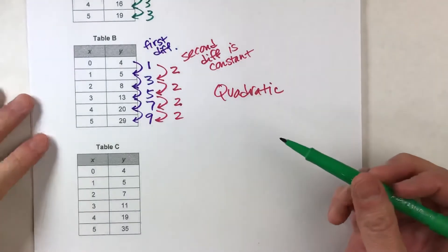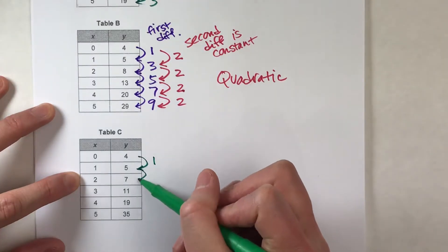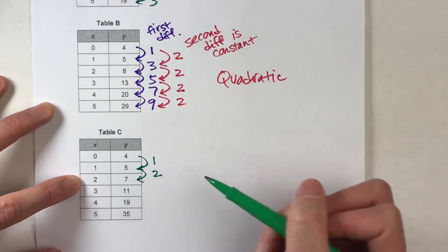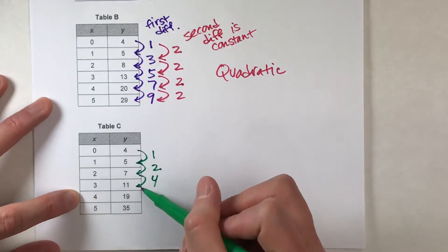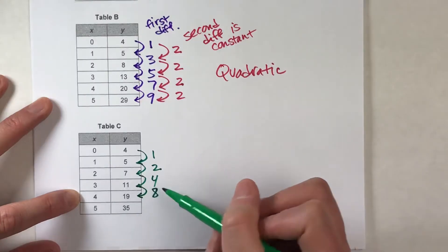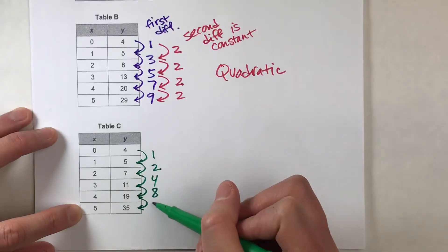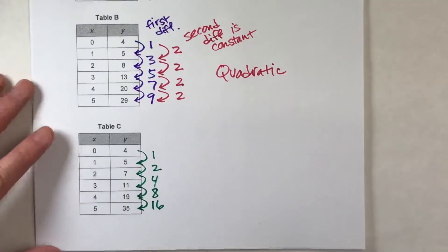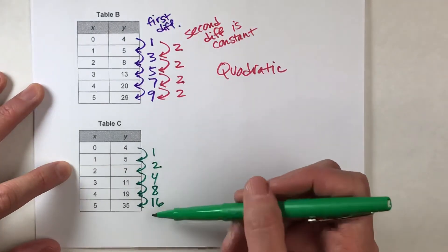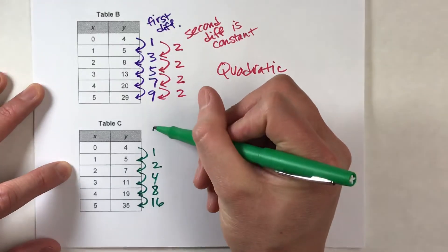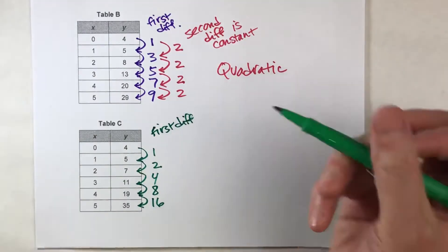Here we go. Table C. We've got from 4 to 5, it's going up 1. From 5 to 7, it's going up 2. From 7 to 11, it's going up 4. From 11 to 19, it's going up 8. And then from 19 to 35, it's going up 16. So it's not linear. The amount we're adding each time changes. That's our first difference. Now, since it's not linear, we've got to check to see if it's quadratic.